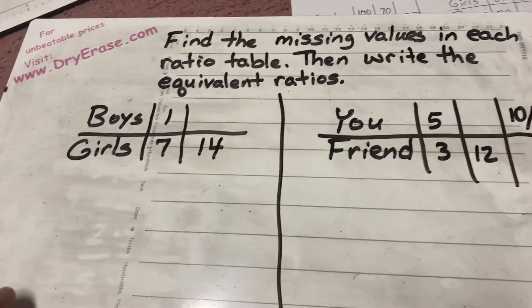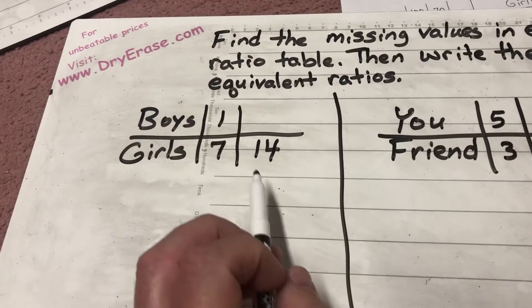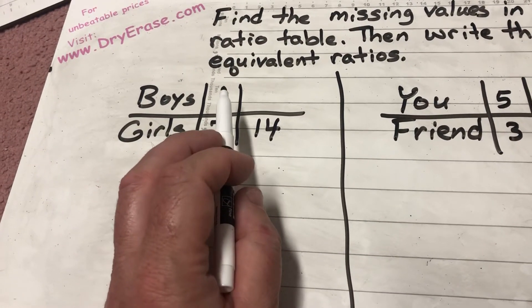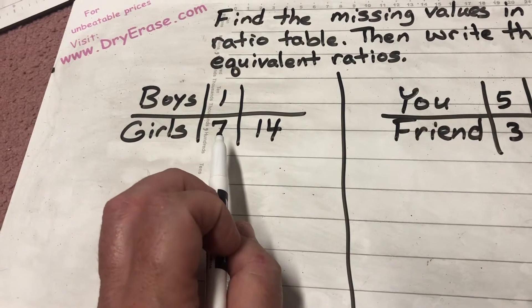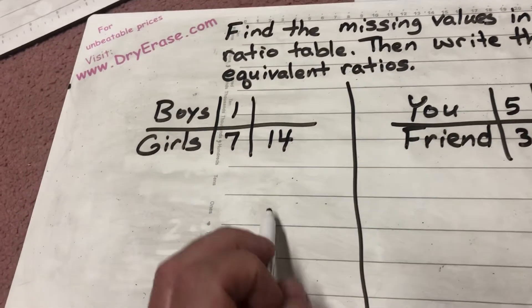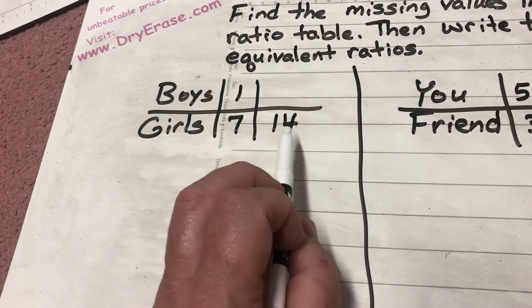So this is what we're after here. This is basically telling us for every one boy, there are seven girls. So I'm saying to myself, well, what did they do to seven to get 14?